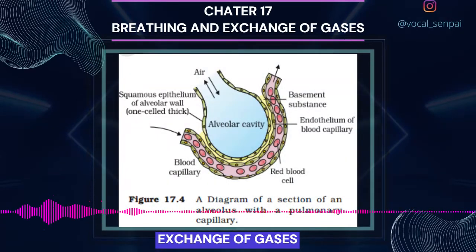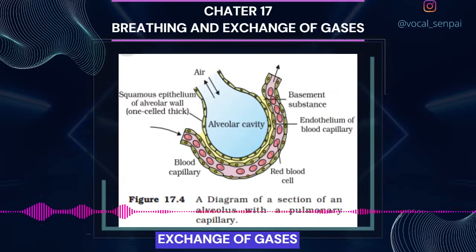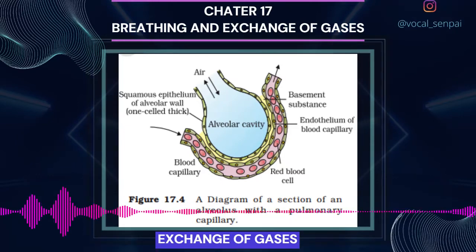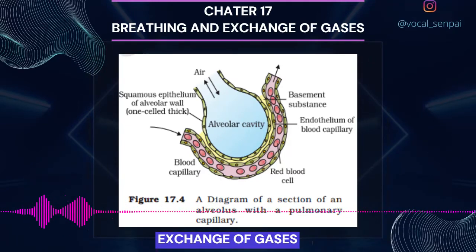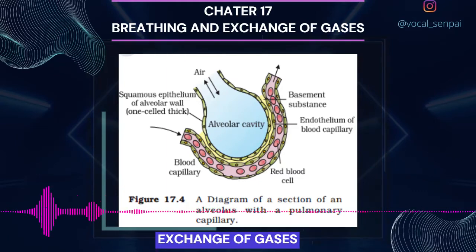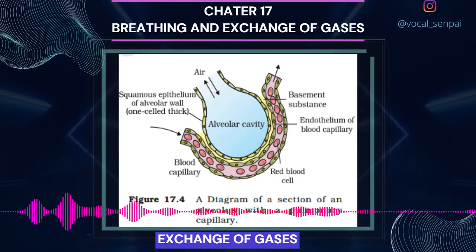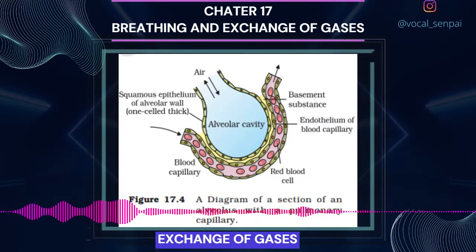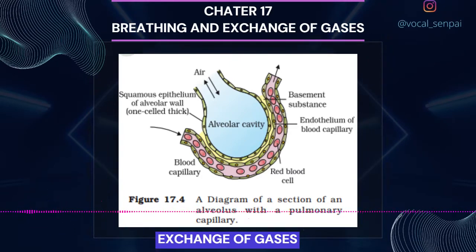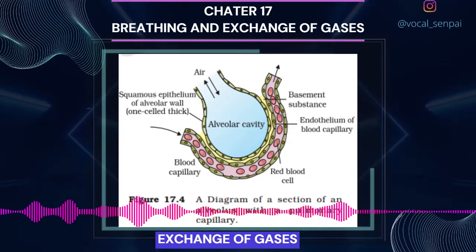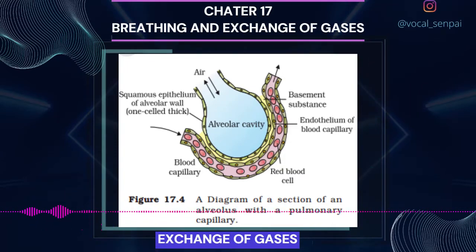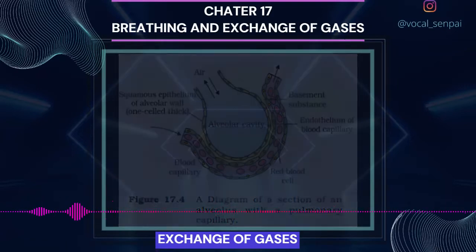The diffusion membrane is made up of three major layers: the thin squamous epithelium of alveoli, the endothelium of alveolar capillaries, and the basement substance — composed of a thin basement membrane supporting the squamous epithelium and the basement membrane surrounding the single-layer endothelial cells of capillaries in between them. However, its total thickness is much less than a millimeter. Therefore, all the factors in our body are favorable for diffusion of O2 from alveoli to tissues and that of CO2 from tissues to alveoli.